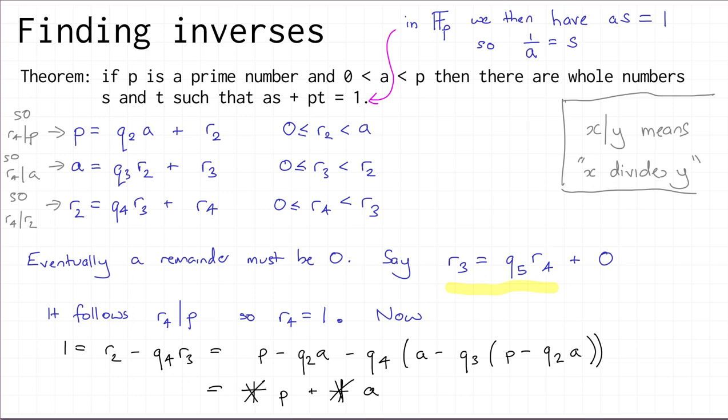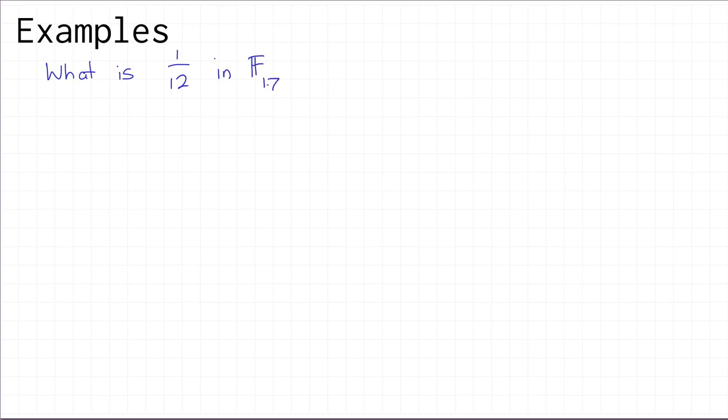This might not look like a completely practical procedure for finding s and t given p and a, but I promise it actually is. Let's try some examples. What is 1 divided by 12 in the finite field with 17 elements? According to our recipe, we look for numbers s and t such that s times 12 plus t times 17 equals 1, and the way to do this is just keep doing division with remainder.